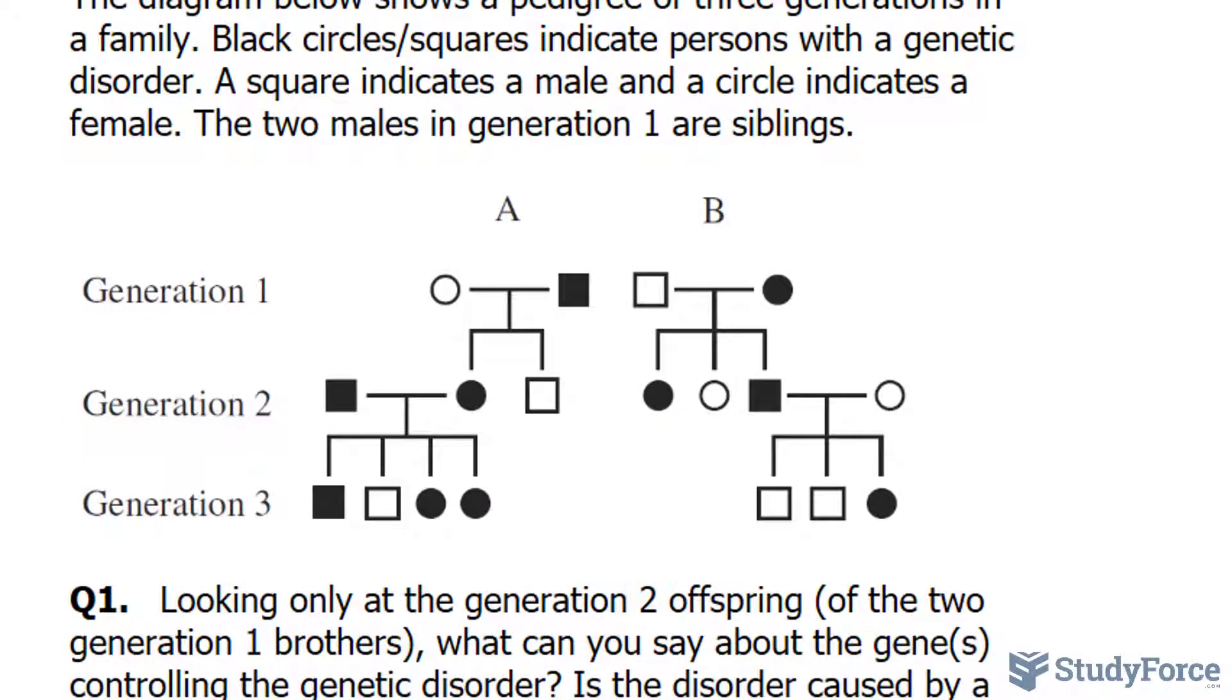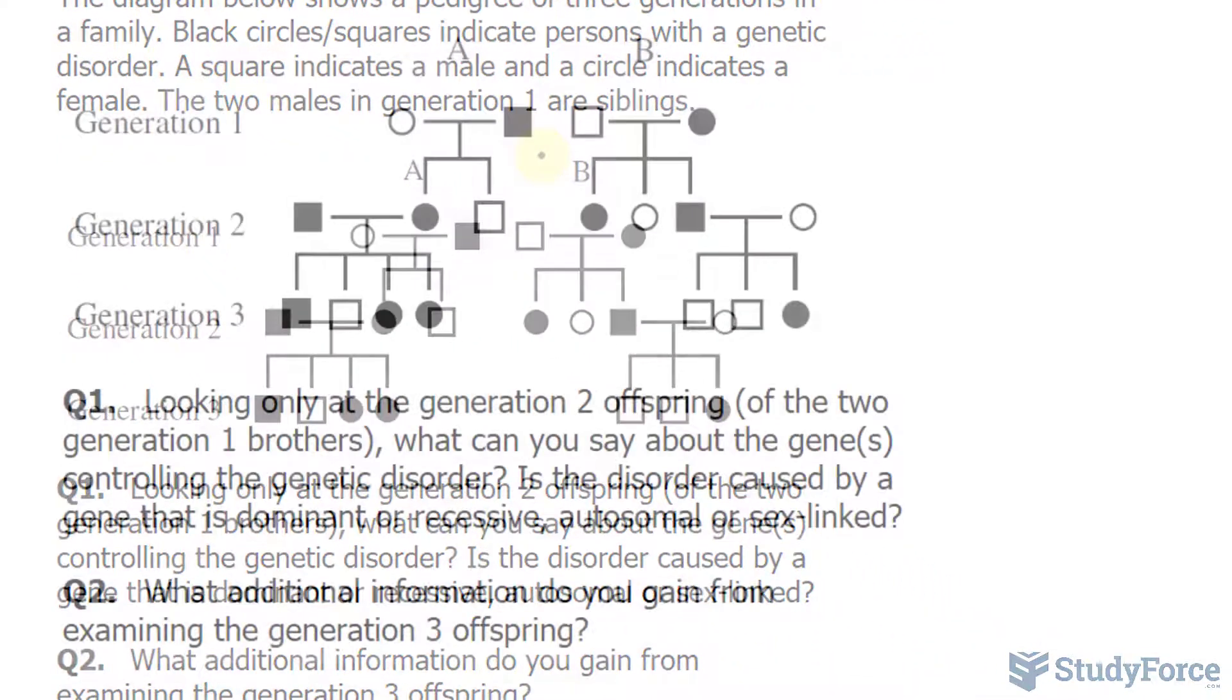As you can tell, we have two lineages here - lineage A and B. These two brothers, one with the genetic disorder and one without, started families of their own. We want to determine whether this disorder is dominant, recessive, autosomal or sex-linked.